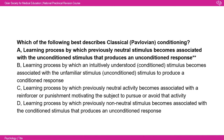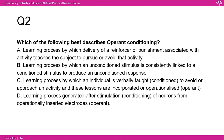Question two: which of the following best describes operant conditioning? A: a learning process by which delivery of a reinforcer or punishment associated with an activity teaches the subject to pursue or avoid that activity; B: a learning process by which an unconditioned stimulus is consistently linked to a conditioned stimulus to produce an unconditioned response; C: a learning process by which the individual is verbally taught to avoid or approach an activity; D: a learning process generated after stimulation conditioning of neurons from an operationally inserted electrode.